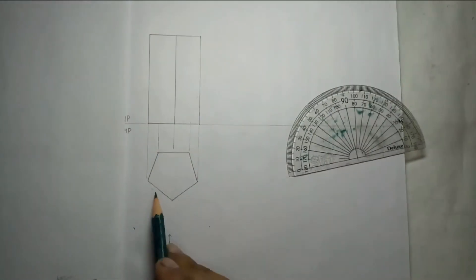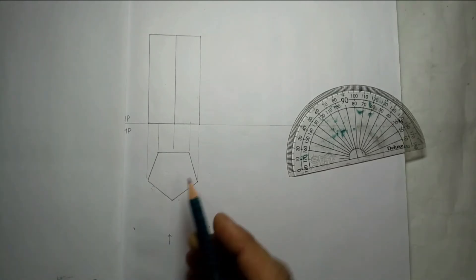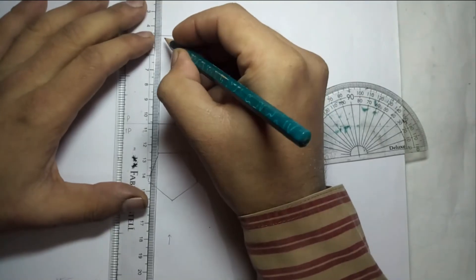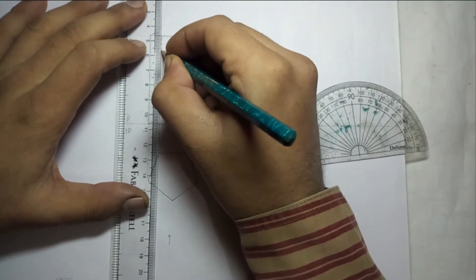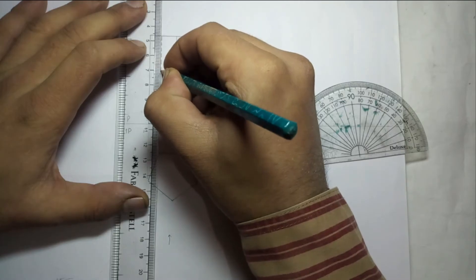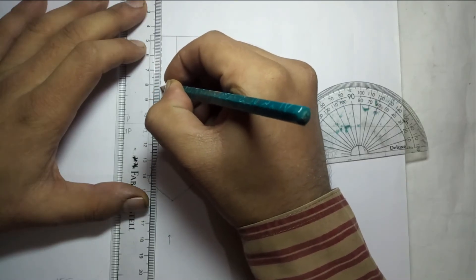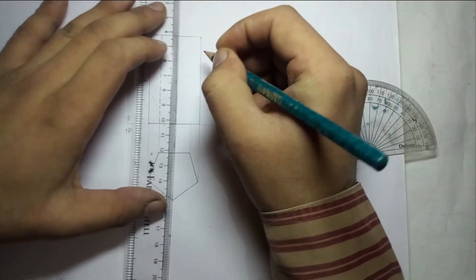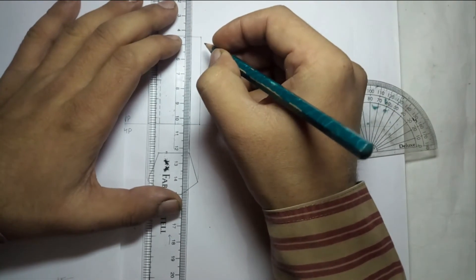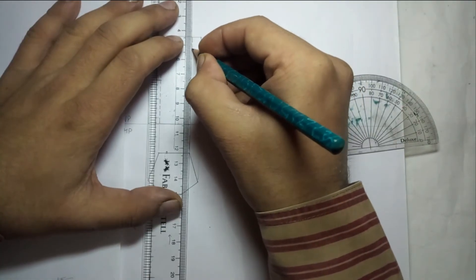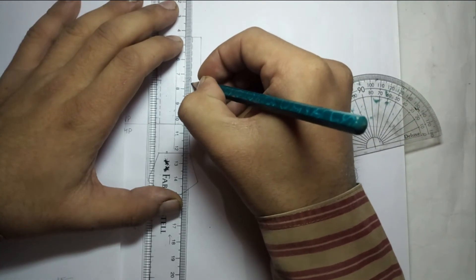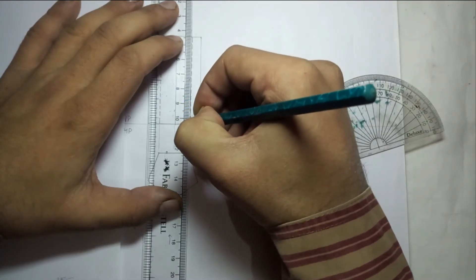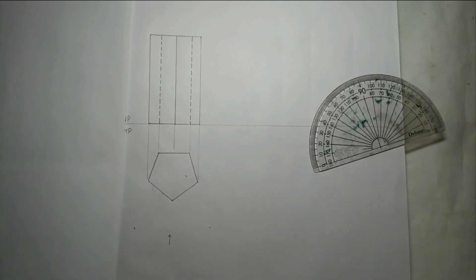Now what about these? It will come as a hidden line because these are not visible but present in the object. So you have to show them as dashes, continuous dashed line, 3-1, 3-1. We know how to draw the hidden edges like this.